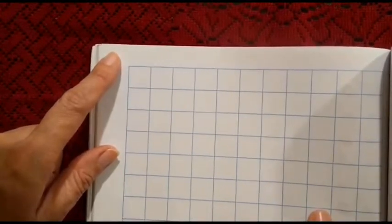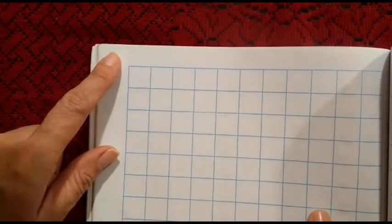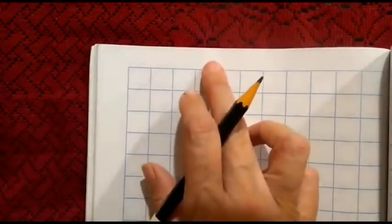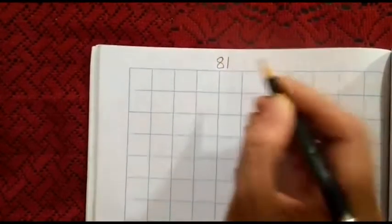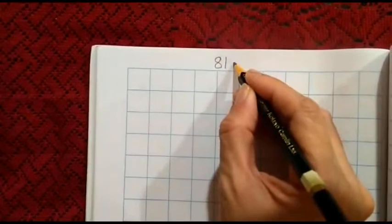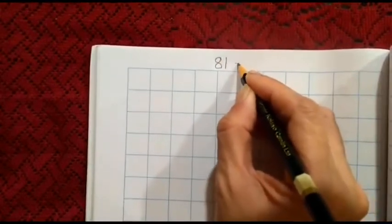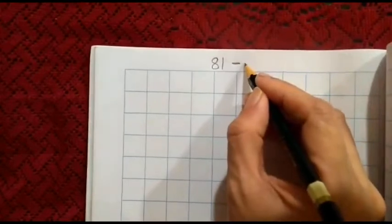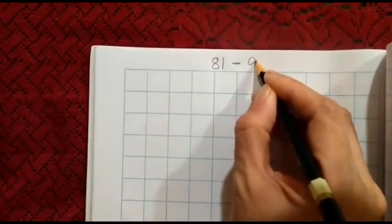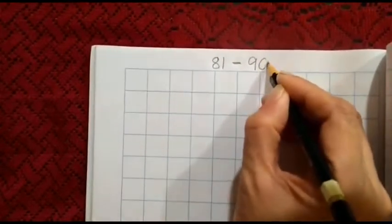Let us write number 81 to 90 in Mathematics Pencil Time. We will begin with writing today's date on the top left corner. So children, you all please write today's date there. After that, here we will write 81, then we will leave some space, put a dash, then we will again leave some space and we will write 90.